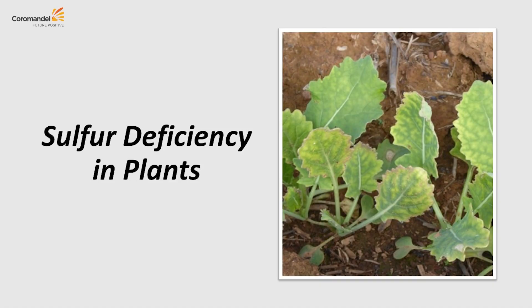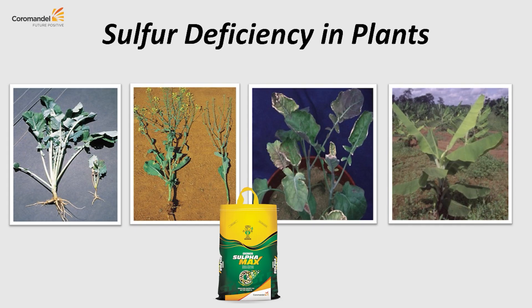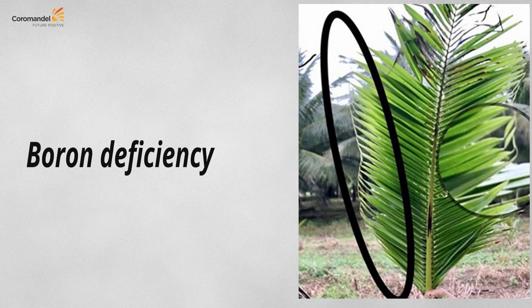Sulfur is the fourth essential macronutrient, particularly important for oil seed crops for oil formation. Being variably mobile, its deficiency is similar to nitrogen deficiency and may appear in the middle or top of the plant as chlorosis. In brassica, leaves curl marginally and redden. In legumes, nodule formation is less and grain protein quality is lower. Deficiency symptoms are shown for brassica and banana.